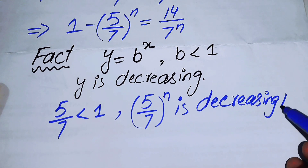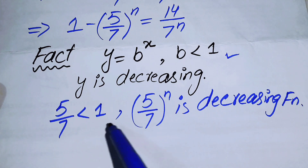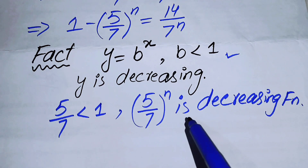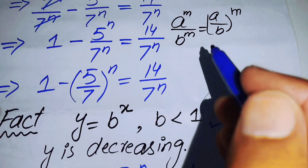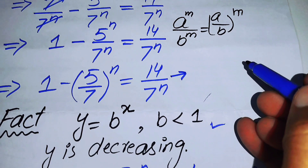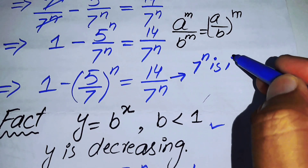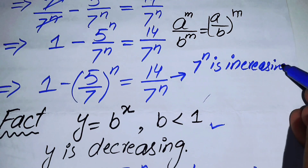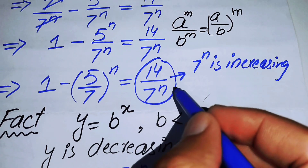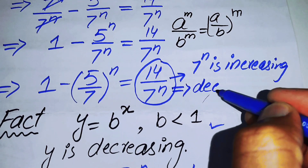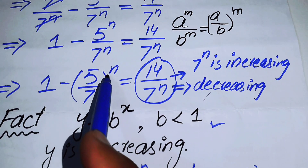Since 5/7 is less than 1, (5/7)^n is a decreasing function. On the right hand side, 7^n is itself an increasing function, and when we divide 14 by 7^n, the whole expression 14 over 7^n becomes a decreasing function. We now move the (5/7)^n term to the right hand side.